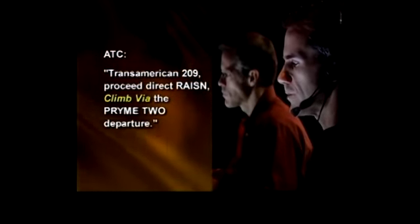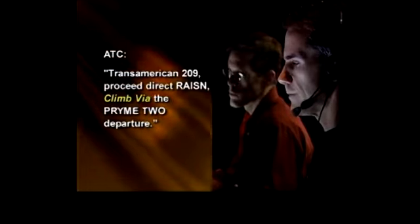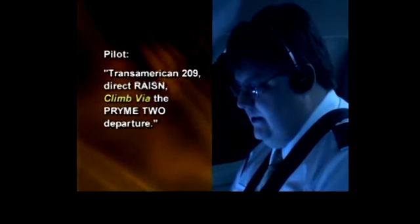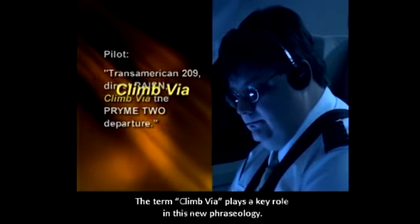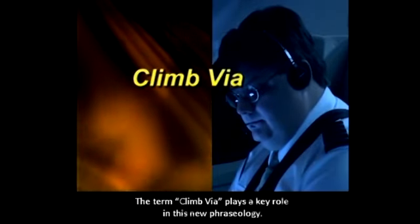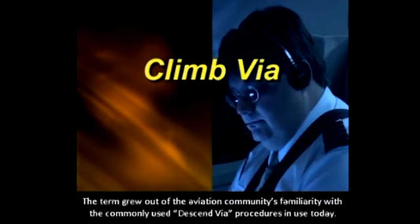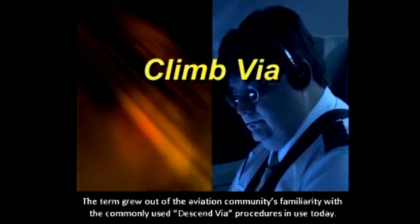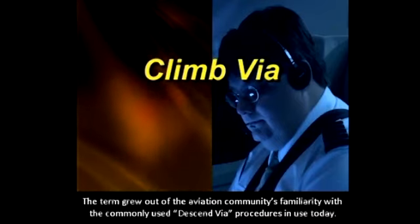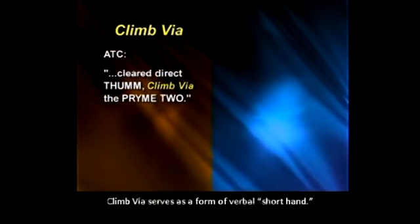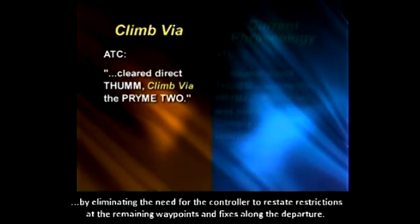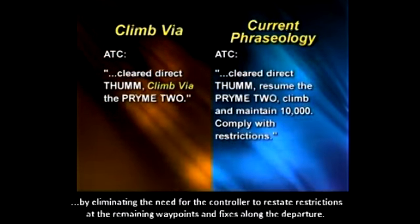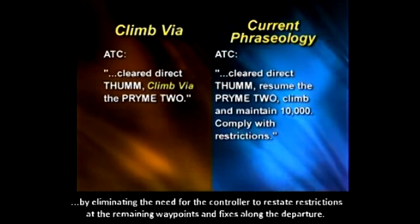Trans-American 209, proceed direct Raisin, climb via the Prime 2 departure. Trans-American 209, direct Raisin, climb via the Prime 2 departure. The term 'climb via' plays a key role in this new phraseology. The term grew out of the aviation community's familiarity with the commonly used 'descend via' procedures in use today. Climb via serves as a form of verbal shorthand, used in conjunction with SIDs and RNAV SIDs to reduce phraseology by eliminating the need for the controller to restate restrictions at the remaining waypoints and fixes along the departure.